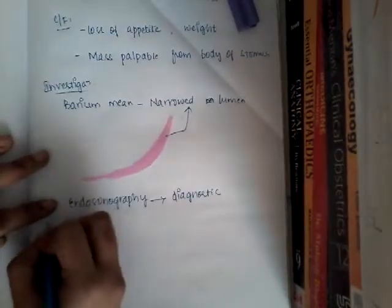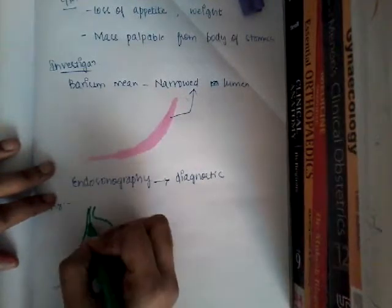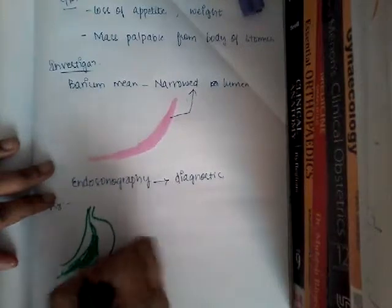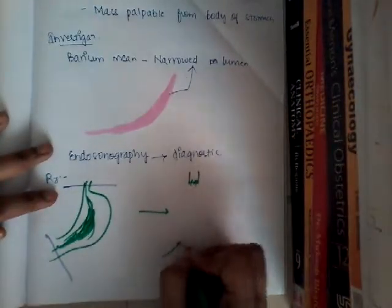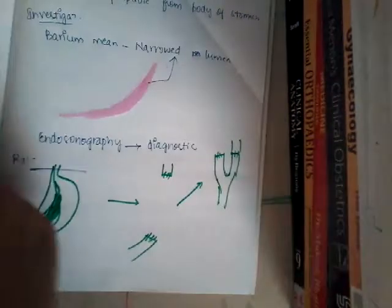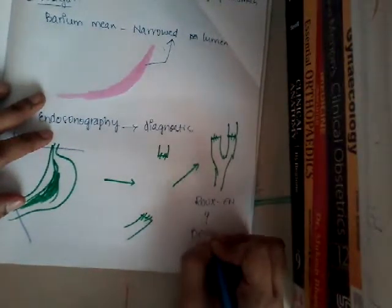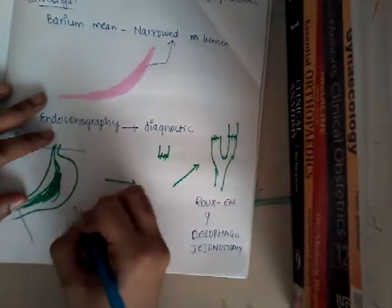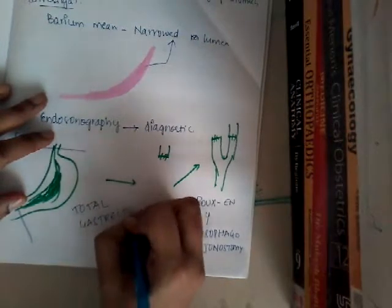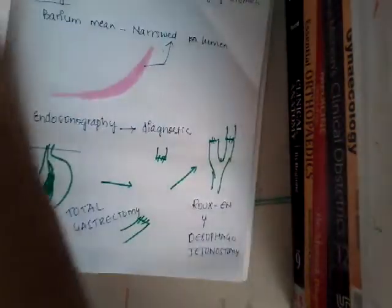The treatment for linitis plastica: you will have to do a total gastrectomy and then esophagojejunal anastomosis by the Roux-en-Y technique — esophagojejunostomy. So you do total gastrectomy first and then esophagojejunostomy. This covers scirrhous carcinoma or linitis plastica.